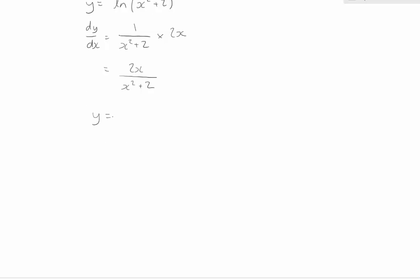If we had y equals natural log of 4x, when you differentiate this, it's going to be 1 over 4x. Then we multiply by the derivative of the inside function, which is 4. That's going to give us 4 over 4x, and you notice that will simplify to 1 over x, which is the same as log of x.